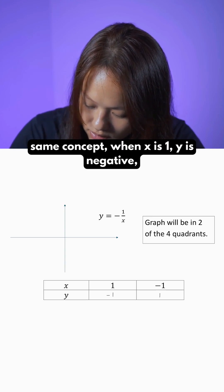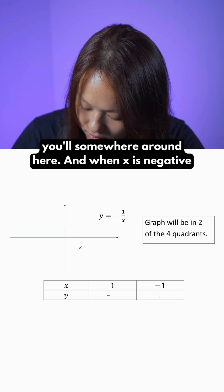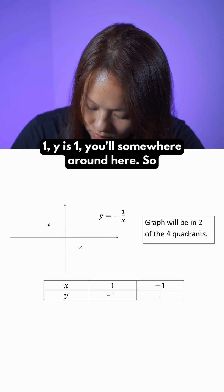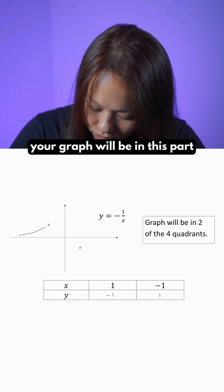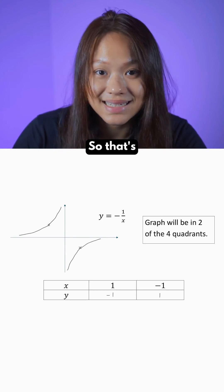So using the same concept, when x is 1, y is negative 1, you'll be somewhere around here. And when x is negative 1, y is 1, you'll be somewhere around here. So your graph will be in this part and this part. So that's it.